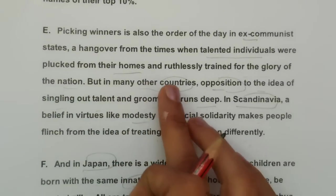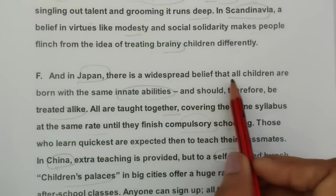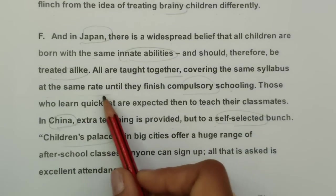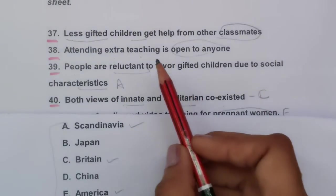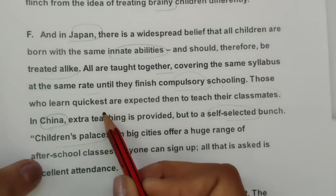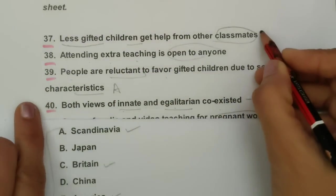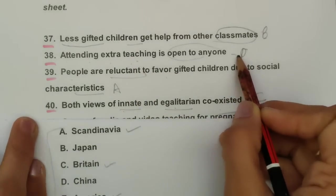For Japan: 'all children are born with the same innate abilities and should therefore be treated alike — all are taught together covering the same syllabus. Those who learn quickest are expected to teach their classmates.' So less-gifted children get help from other classmates. Japan = B, question 37.